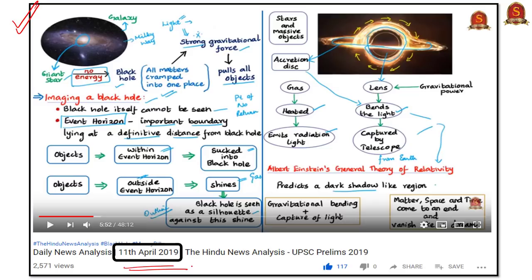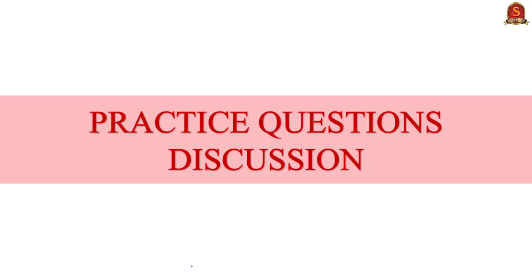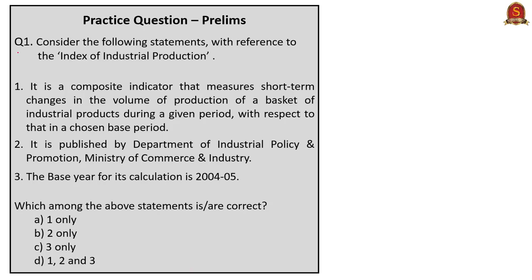With this, we are winding up today's analysis. Let us move on to the practice question discussion. The first question is: consider the following statements with reference to the Index of Industrial Production. Statement 1 says it is a composite indicator that measures short-term changes in the volume of production of a basket of industrial products during a given period with respect to that in a chosen base period. Statement 2 says it is published by Department of Industrial Policy and Promotion, Ministry of Commerce and Industry. Statement 3 says the base year for its calculation is 2004 to 2005. Which among the above statements is or are correct?